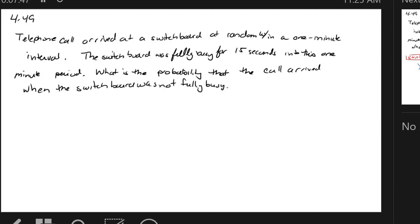Telephone call arrived at a switchboard. I tried to pick something using a word problem with uniform distribution. Telephone call arrived at a switchboard at random within a one-minute interval. The switchboard was fully busy for 15 seconds into this one-minute period. This problem is dated, obviously. What is the probability that a call arrived when the switchboard was not fully busy?